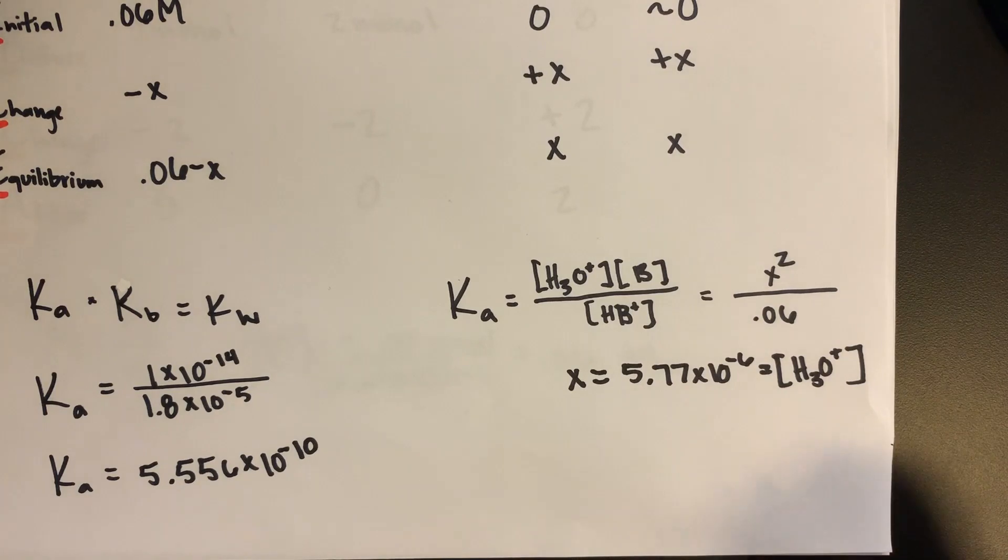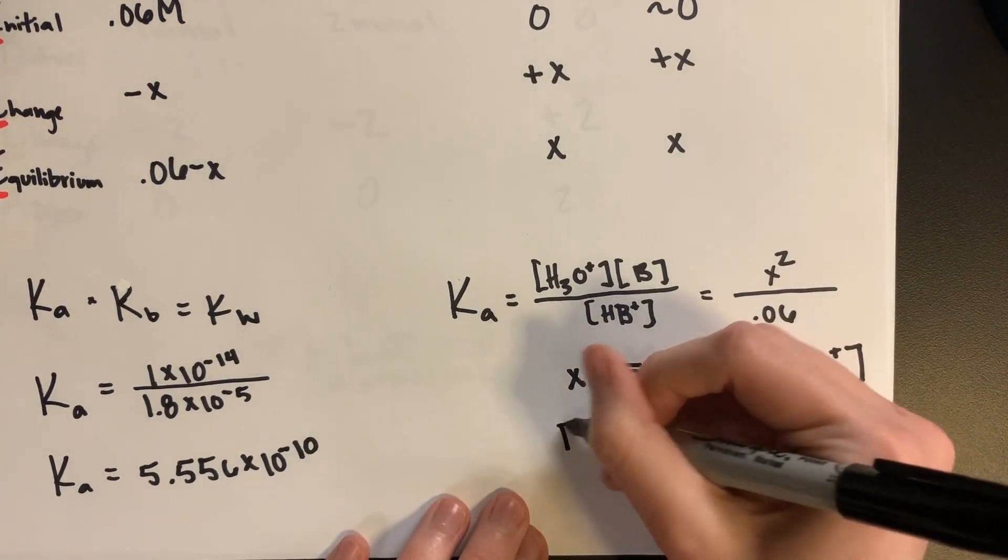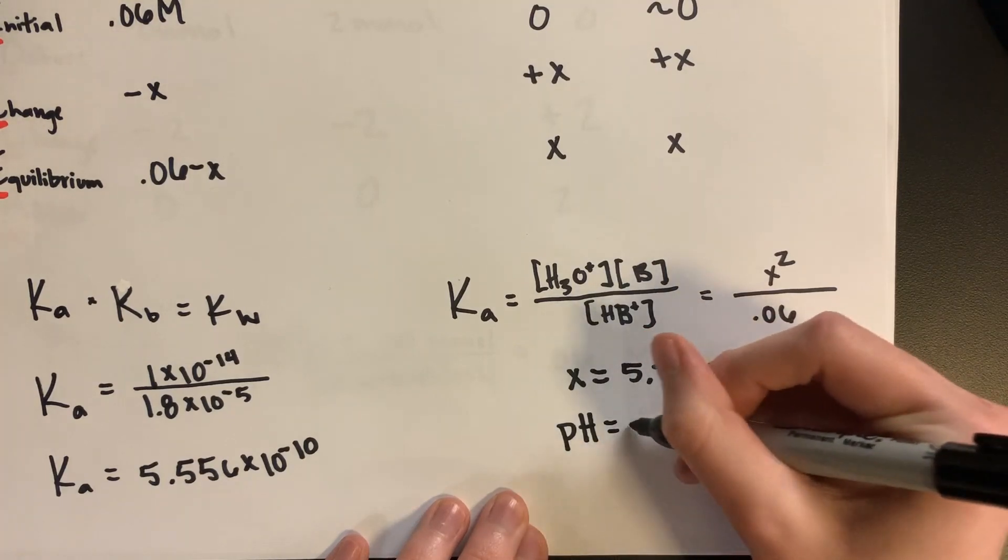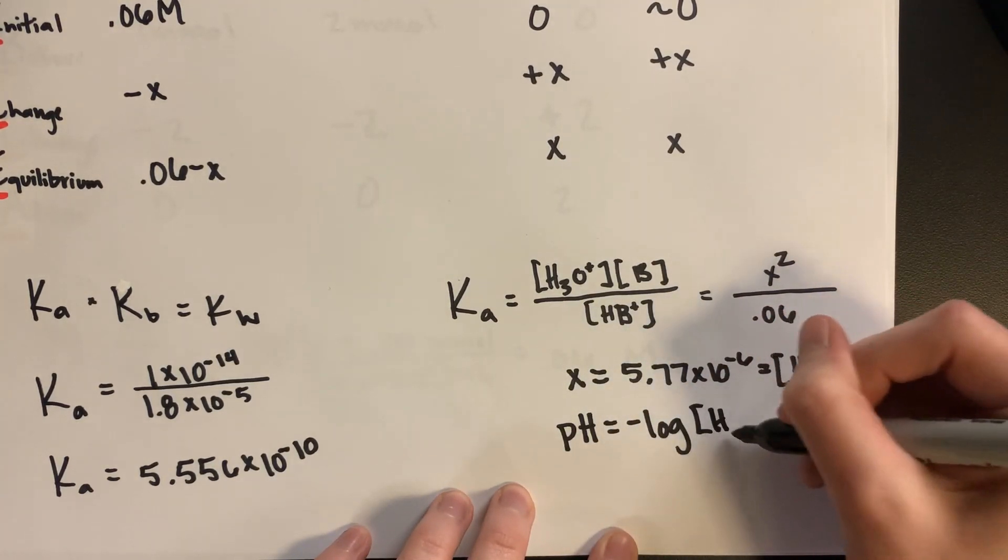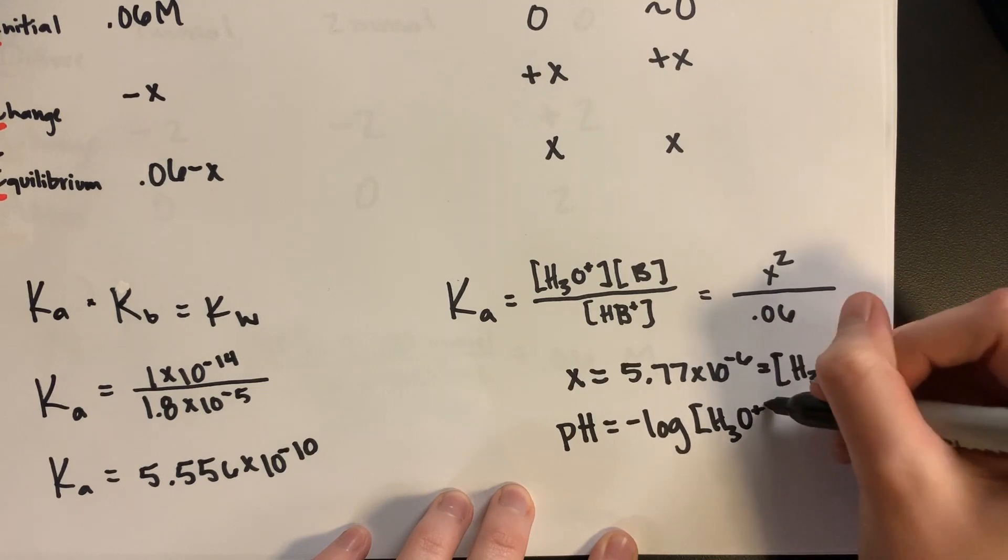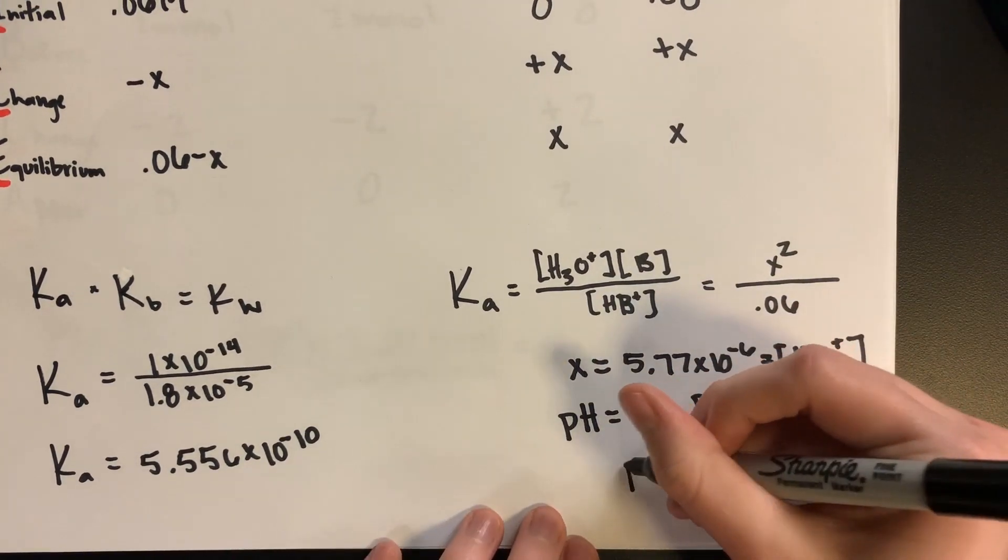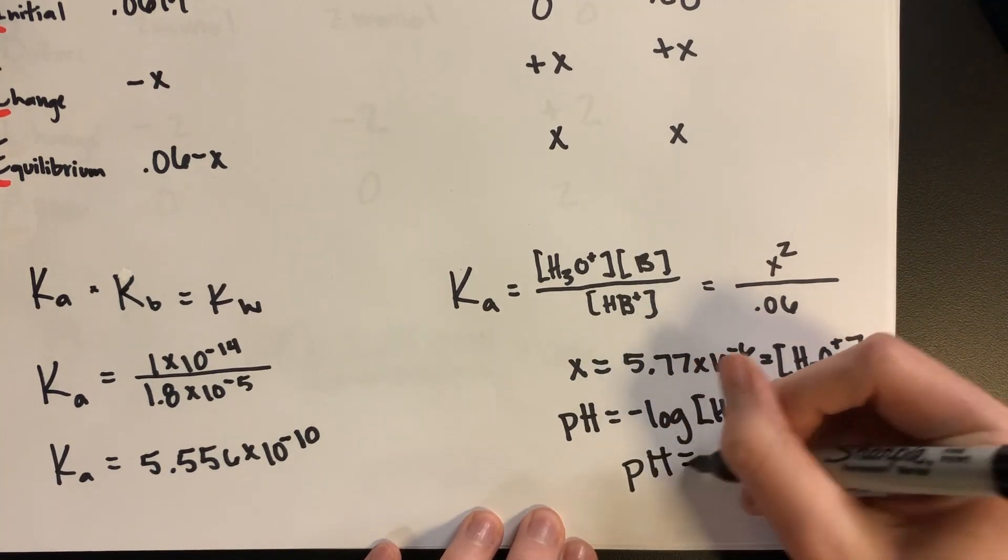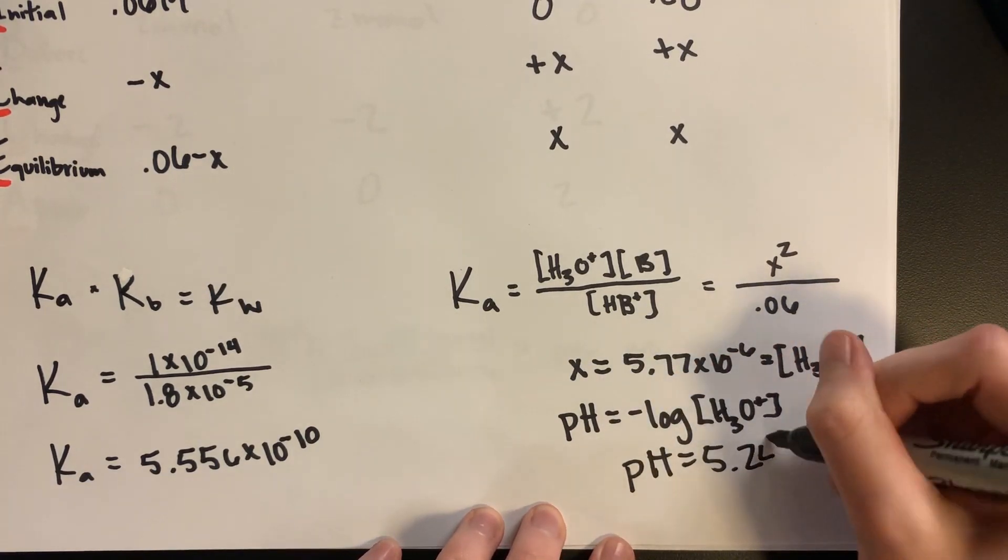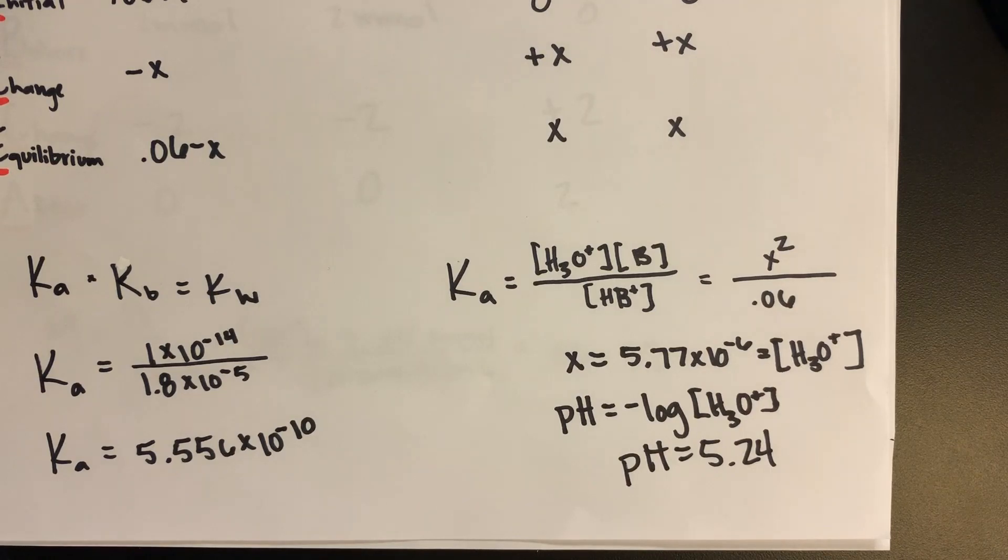And using this, we can find the pH with the formula pH equals the negative log of the hydronium ion concentration. So thus, the pH will equal out to be 5.24, which as we predicted, is less than 7. Thank you for watching.